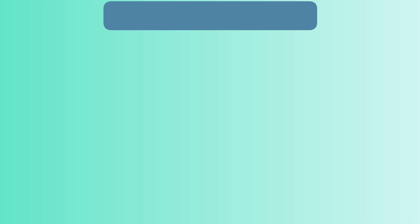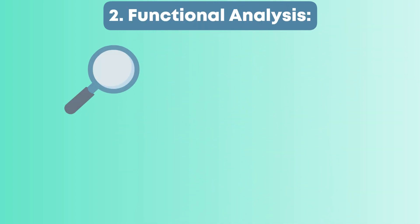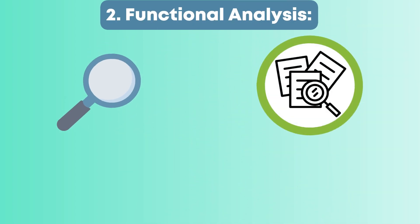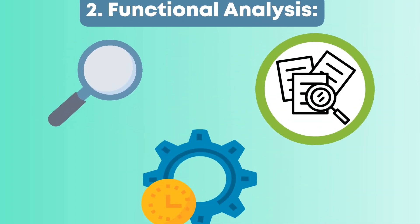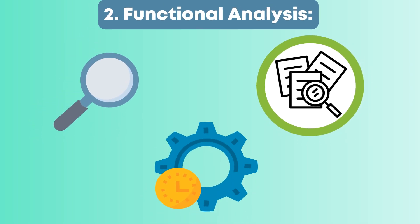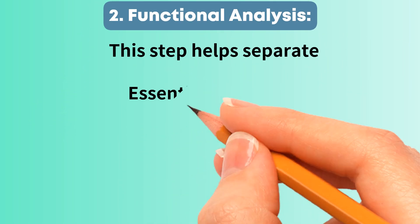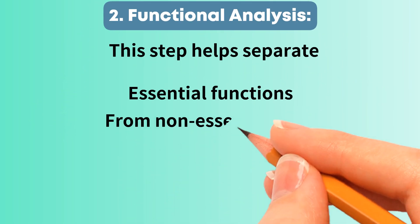Stage 2: Functional Analysis — identifying and defining the core functions of the product or process. This step helps separate essential functions from non-essential ones.